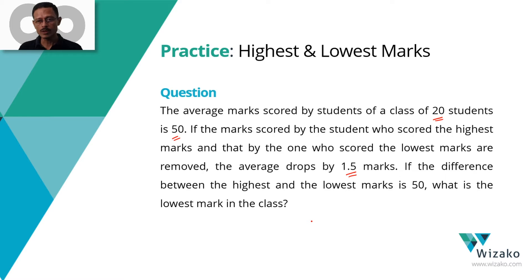We have one more piece of information. If the difference between the highest and the lowest marks is 50, what is the mark scored by the student who scored the lowest mark in the class?